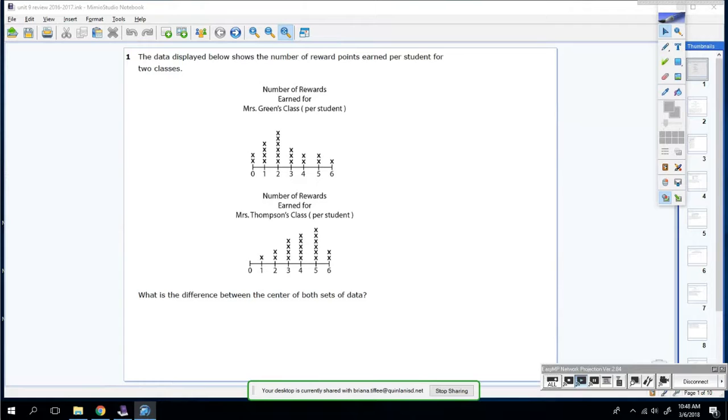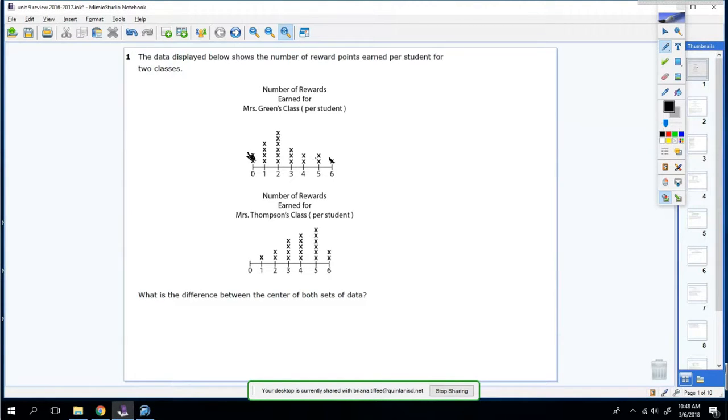So first one, the data displayed below shows the number of reward points earned per student for two classes. What's the difference between the center of both sets of data? So we're going to find the medians, because another word for center is median. So we're going to find the median for the first one. So you cross one off, cross one off, and I finally get this row left. The only row left is two, so my median is two.